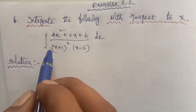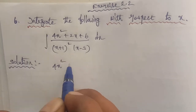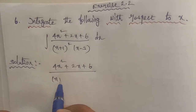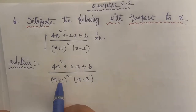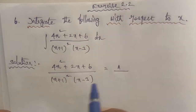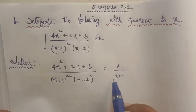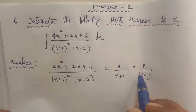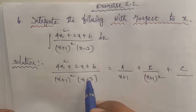First, without integration, let us look at the given question again. The given question is 4x squared plus 2x plus 6 divided by (x plus 1) whole power squared into (x minus 3). It is a partial fraction of type 2. So we write: A by (x plus 1) plus B by (x plus 1) whole power squared plus C by (x minus 3).